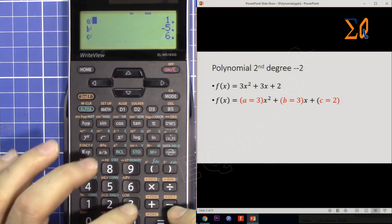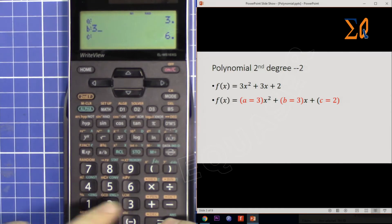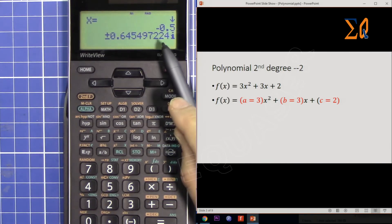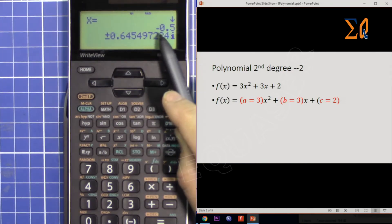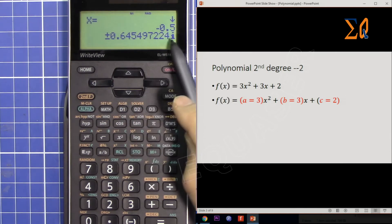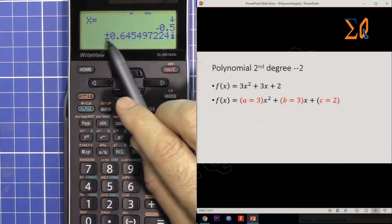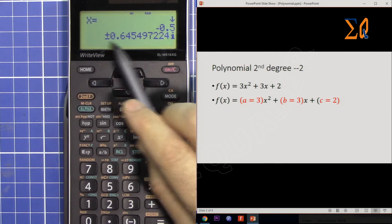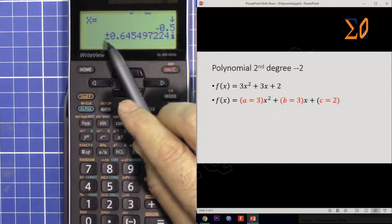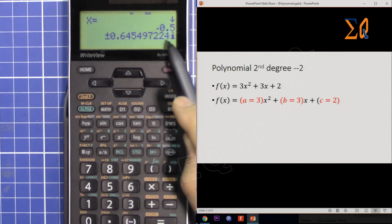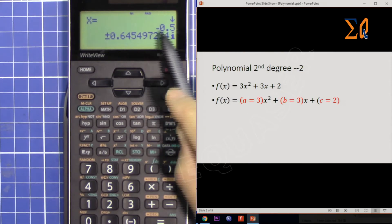So now I got answers for x. We have one value which is -5 plus/minus, which means we have two values here: -5 + 0.64i (which is imaginary) and -5 - 0.65i. So we have two values.